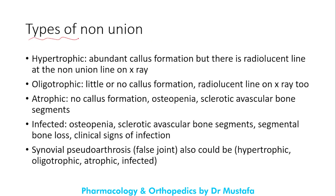There are several types of non-union. Hypertrophic non-union is when there is abundant callus formation but a radiolucent line at the non-union site on X-ray — a lot of callus forms but the fracture line is still visible, because excessive movement at the fracture site during healing leads to non-union. Oligotrophic non-union is when there is little or no callus formation, and the radiolucent line is also seen on X-ray.